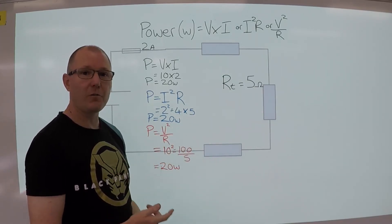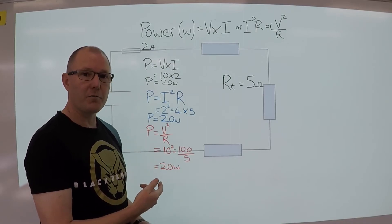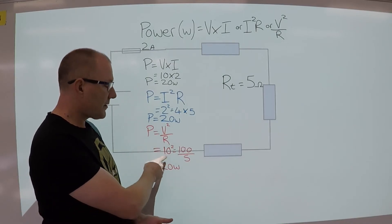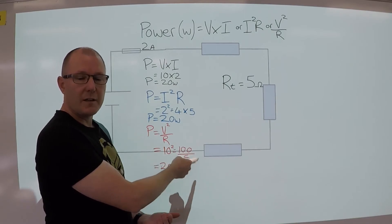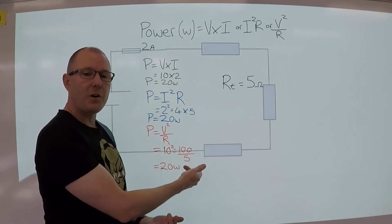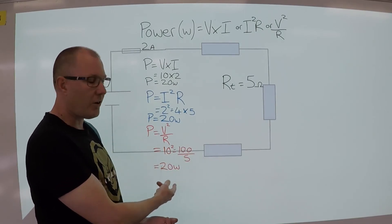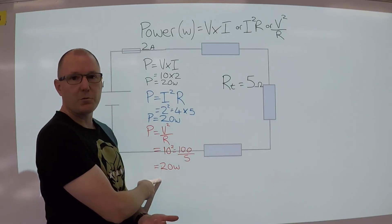Next one we can use voltage squared divided by the resistance. So in this case 10 squared, which is the voltage, equals 100, divide that by the resistance, which is 5, and that gives us a total of 20 watts.